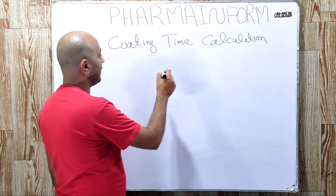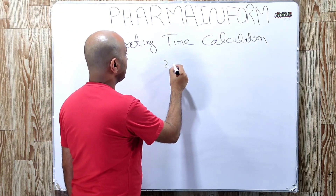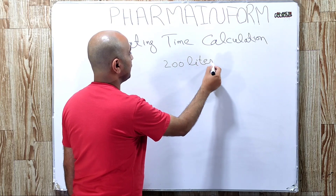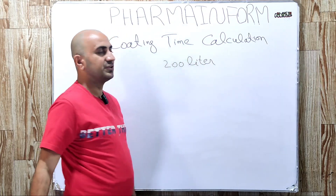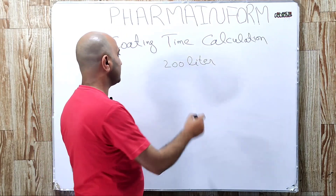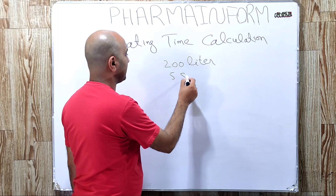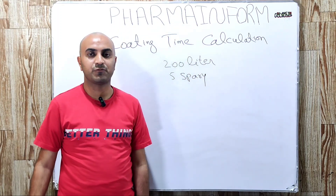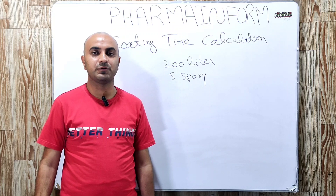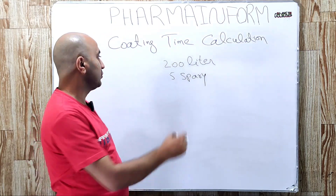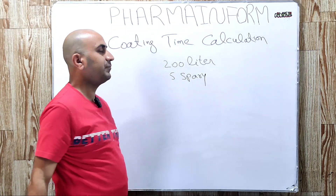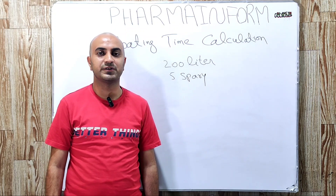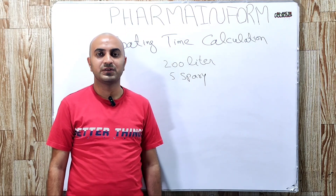Suppose you are asked to calculate coating time for 200 liters of suspension and you are using 5 spray guns in a perforated coating pan. How will you calculate the time required to finish the 200 liters of suspension?